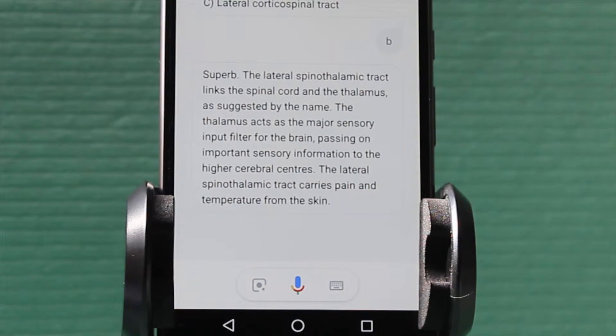The lateral spinothalamic tract links the spinal cord and the thalamus, as suggested by the name. The thalamus acts as the major sensory input filter for the brain, passing on important sensory information to the higher cerebral centers. The lateral spinothalamic tract carries pain and temperature from the skin.